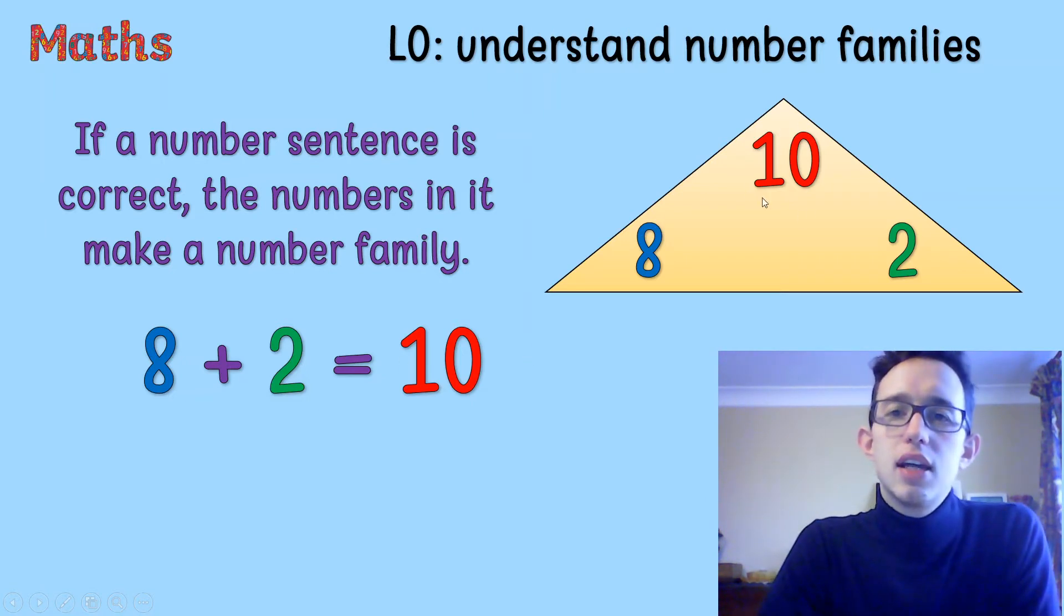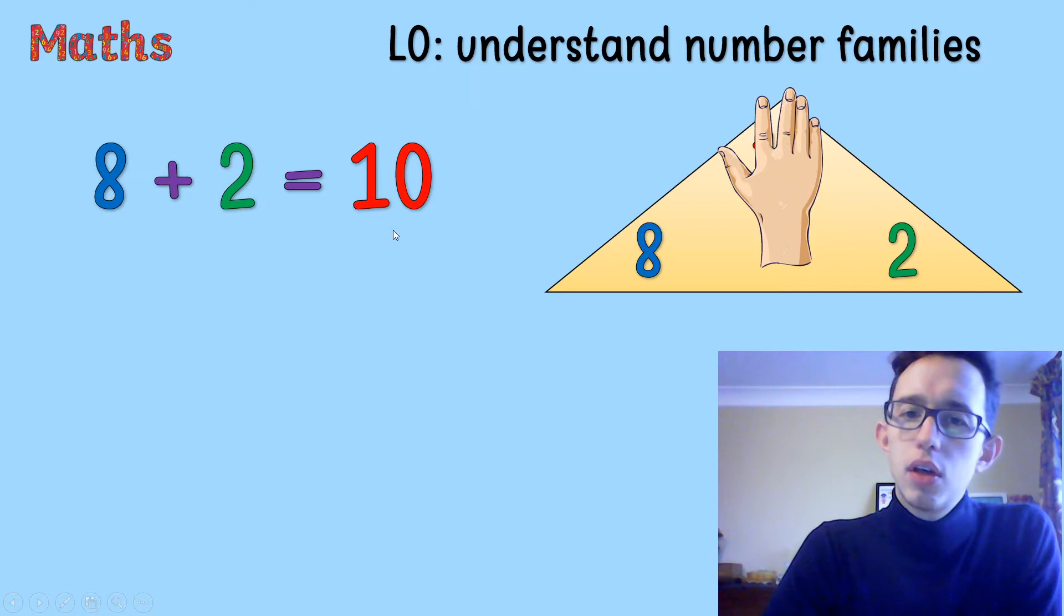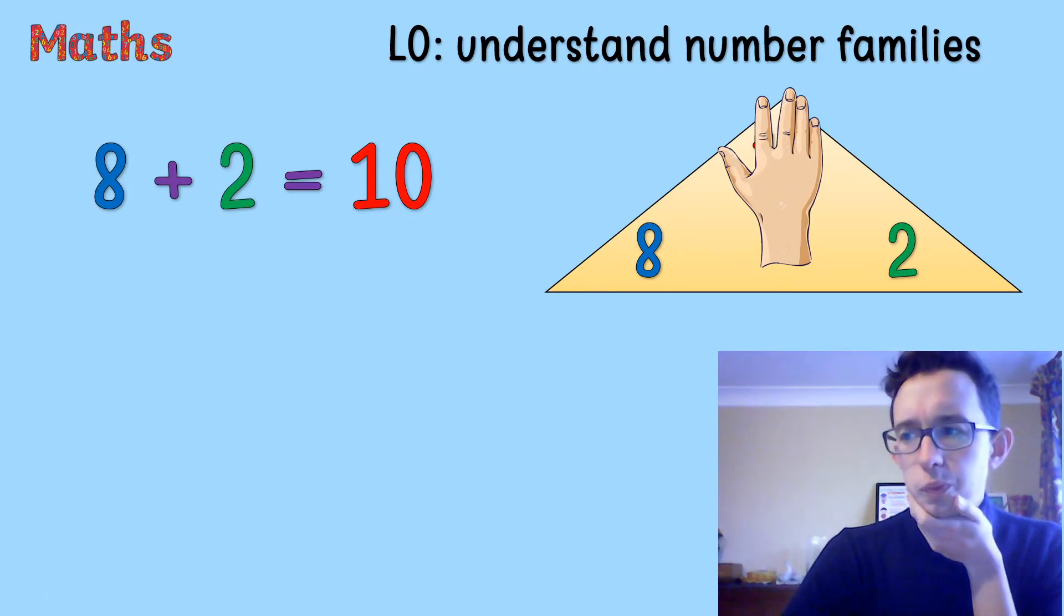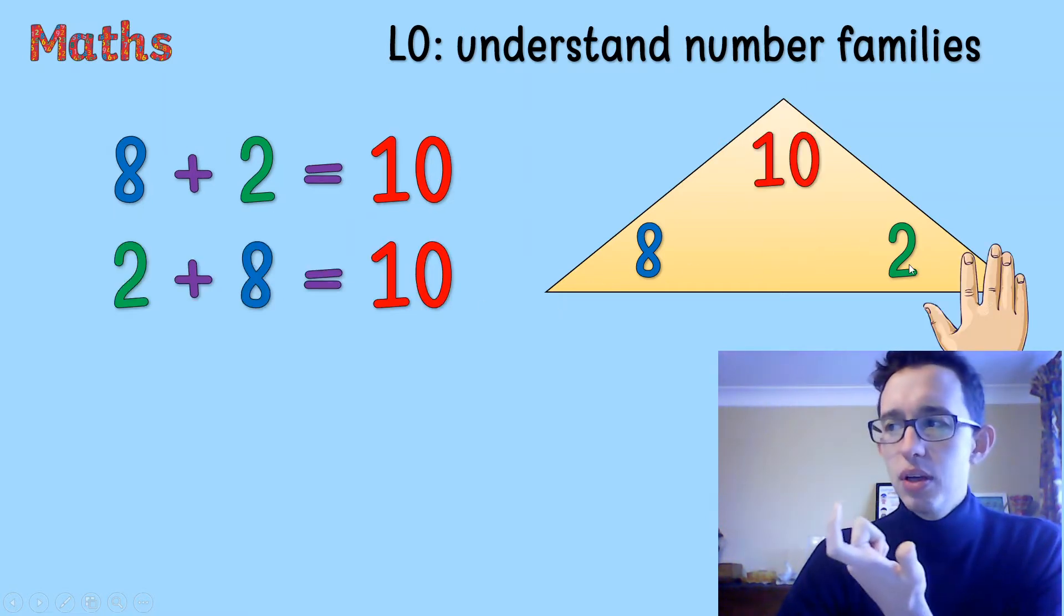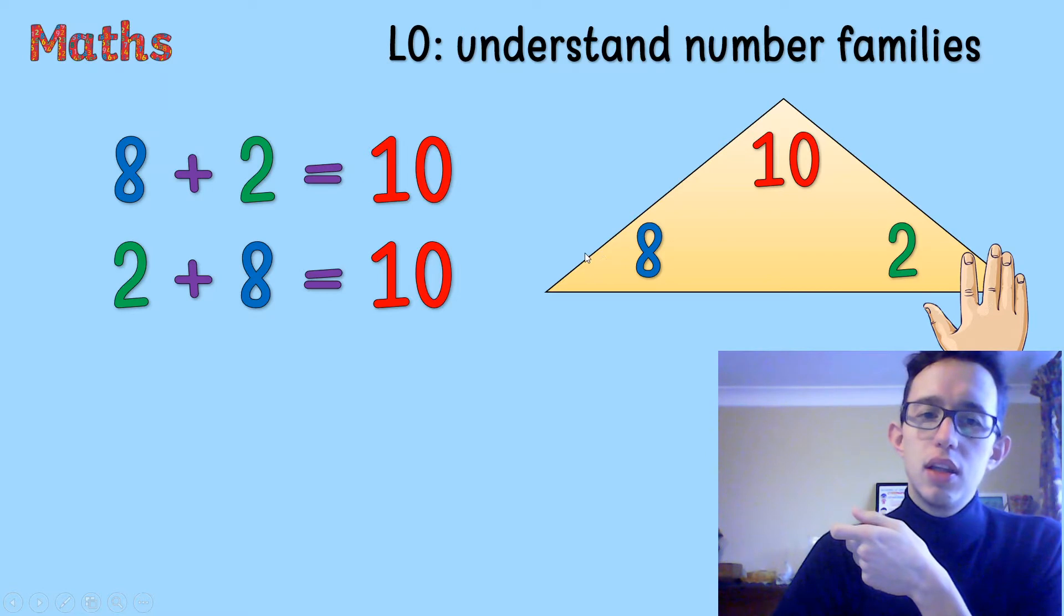So what we also know when it's a number family is we can use that to show something else. Because if we cover up that 10 because that's the answer we want to get, we can say 8 and 2 is 10. Is there any other way that we could write that number sentence? Or we could say 2 and 8 is 10. So we could swap those numbers because it's an addition.